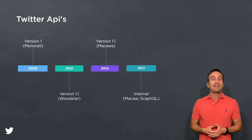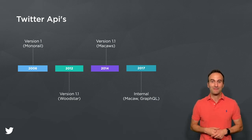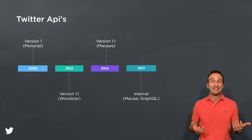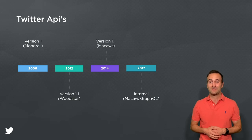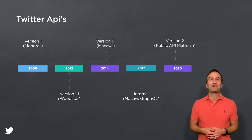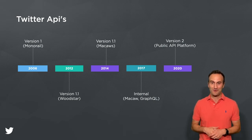In early 2019, we started to plan for the next major version of the Twitter public API, and we knew we needed a new architecture to address the public API's slow iteration speeds and continued fragmentation. This brings us to this year, when our new architecture started powering the public API platform, which now hosts our first API v2 endpoints.